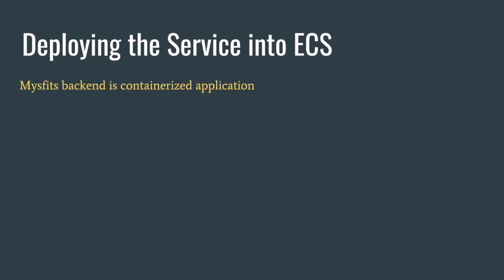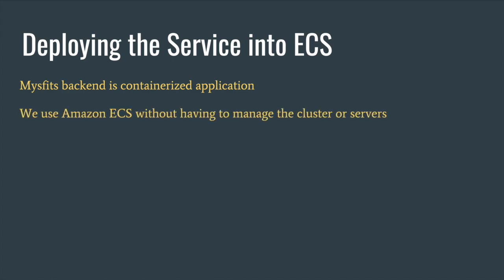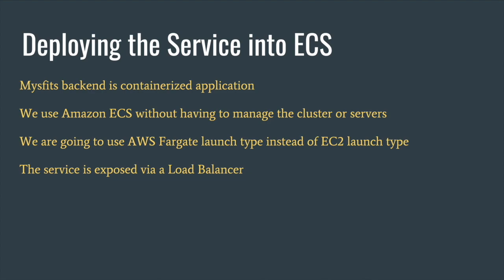We are going to containerize the back end and use ECS with a particular launch type called AWS Fargate in Elastic Container Service, so that we don't have to manage the compute resources in our cluster — that is managed by AWS. Once we have hosted the containers in AWS ECS, we will expose them through a load balancer. We are going to launch multiple containers of our back end for high availability, and we'll expose traffic through a load balancer.